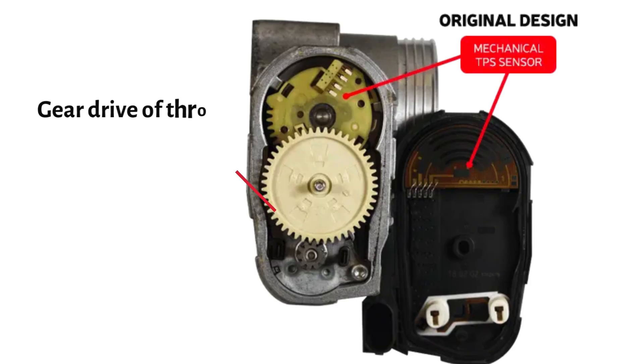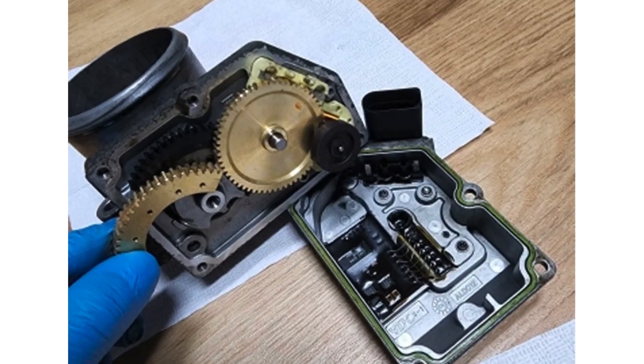Moreover, internal components like gears, shafts, and motors in electronic throttle body can become damaged or worn out over time.